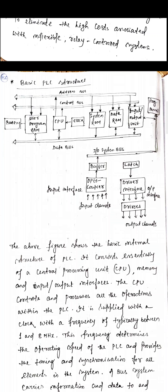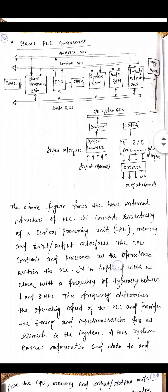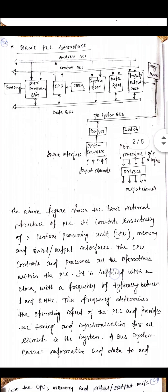The CPU is supplied with a clock having a frequency ranging between 1 MHz to 8 MHz. This frequency determines the operating speed of the PLC and provides the timing and synchronization for all elements in the system.